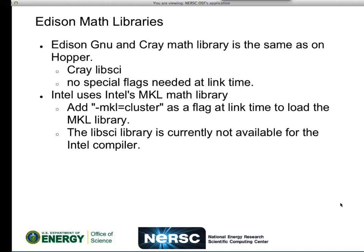Edison math libraries: GNU and Cray math libraries are the same as on Hopper — the old tried-and-true Cray LibSci, been around forever. On Hopper, as it was on Franklin, no special flags are needed; everything links automatically. Intel uses the MKL math library, and as I just mentioned, use -mkl=cluster as a flag at link time to load it. LibSci is currently not available for the Intel compiler — at this point you can't use LibSci for it. It is the default library on Hopper.